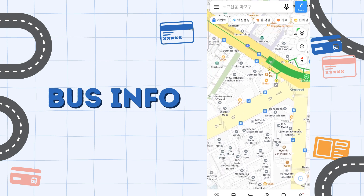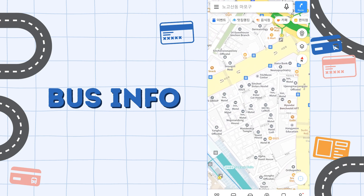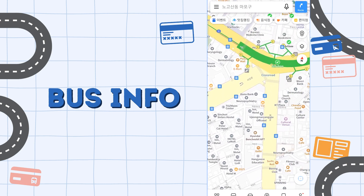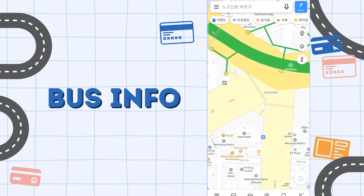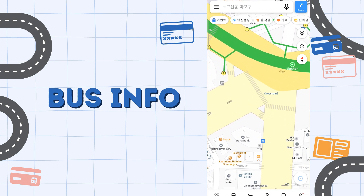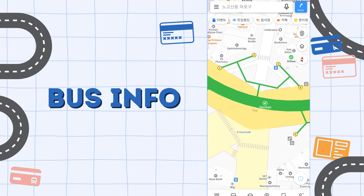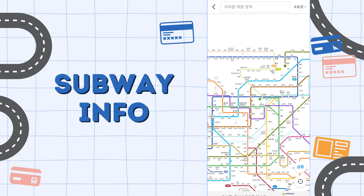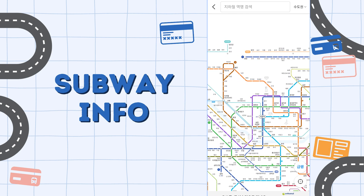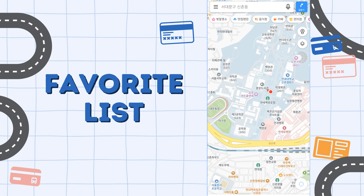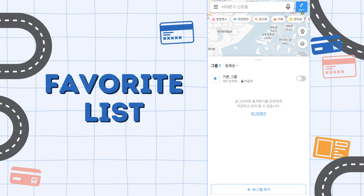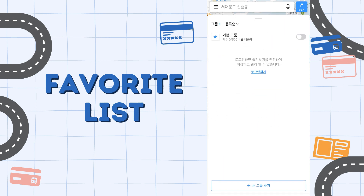Next, the bus information. Zoom in on the map and you will notice blue bus icons — these are the bus stops. You can also get information about the subway on the app. Furthermore, you can bookmark places you want to visit later and create your own favorites list.